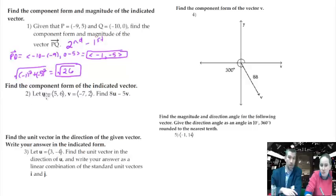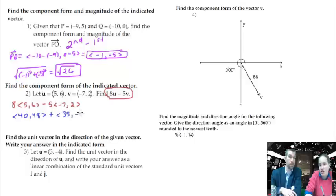So how about number two? Find a component form of the indicated vector. They want us to find 8u minus 5v. So multiply eight with all the things inside of u and five with all the things inside of v. And you can actually go about this kind of two ways because you can either multiply the second vector by five or negative five. If you multiply it by negative five, then you're adding in between them. Personally, that's my preference, that I would rather do forty comma forty-eight, and then go ahead and distribute the negative five so that it's positive thirty-five comma negative ten. Now we're just adding. Add those guys up, forty plus thirty-five. Seventy-five. And forty-eight minus ten. Thirty-eight.